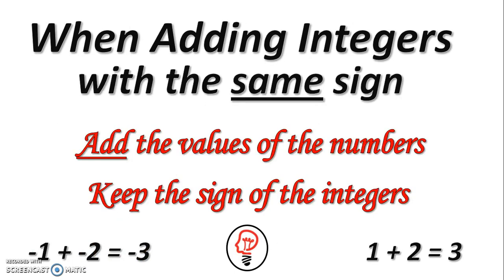When adding integers with the same sign, you add the values of the numbers. At the bottom of the screen, you see two examples — both have one and two. The problem on the left, they're both negative; and the problem on the right, they're both positive. In both examples the answer is three. However, the left equation is negative three, and the right one is positive three. This is because the second rule is that the answer keeps the sign of the integers in the problem. The right three is positive because the one and two are positive, and the left is negative for the same reason.